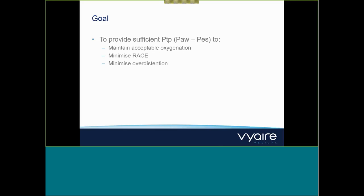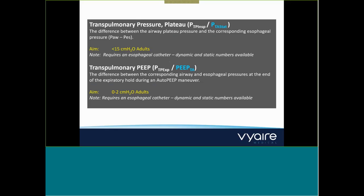The goal is to provide enough transpulmonary pressure to maintain acceptable oxygenation and prevent RACE — repeated alveolar collapse and expansion — while minimizing overdistension. We're effectively adding several pieces of additional information for the clinician. For those who have worked with the AVEA ventilator, two parameters correlate: PTA stat is the equivalent to PTP plateau on AVEA, and PTA equates to transpulmonary PEEP on AVEA.